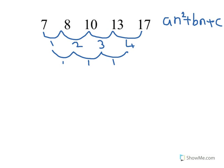The rule for finding a is this: 2 times a always equals the second difference. In this question, the second difference is 1, which means a must be a half — 1 divided by 2. So we now know this number is going to be a half.